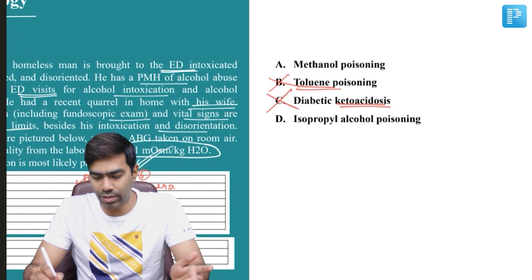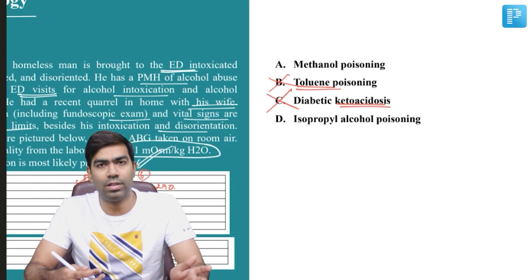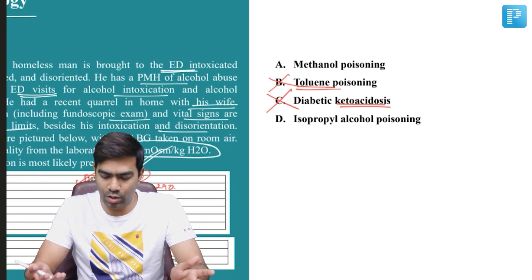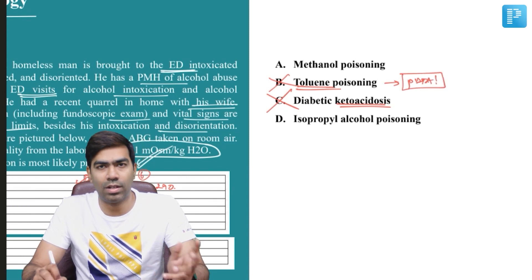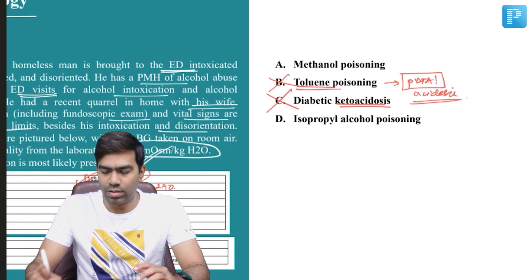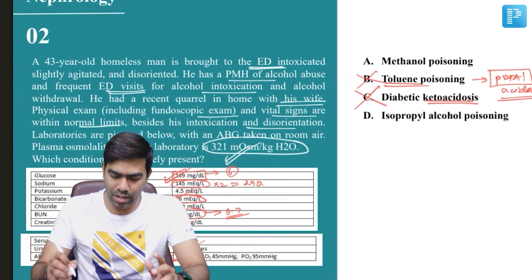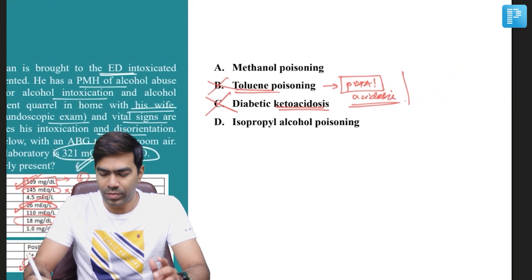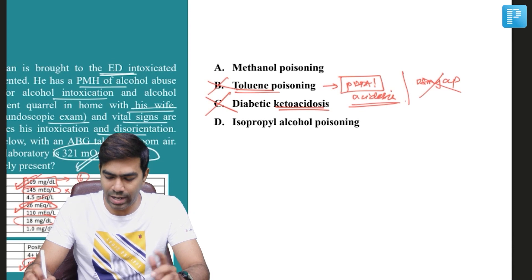It's also not toluene poisoning. Toluene poisoning usually happens because of glue sniffing, and there is a possibility this patient could have gone for glue sniffing given his history of alcohol intoxication. However, toluene poisoning will result in a picture suggestive of proximal renal tubular acidosis — the patient should have acidosis. Here the patient's pH is 7.4 and bicarbonate is 26, so there's no acidosis. Additionally, a raised osmolal gap is not a feature of toluene poisoning, so we can exclude that.